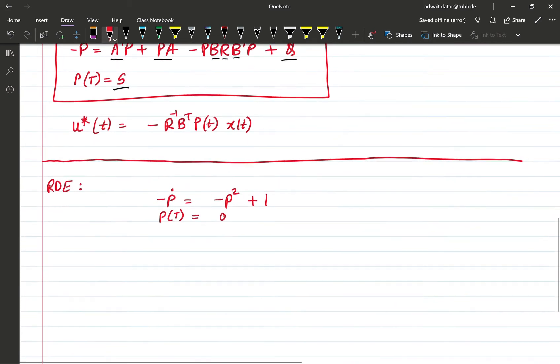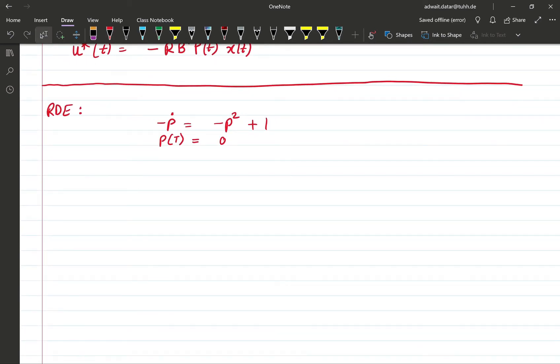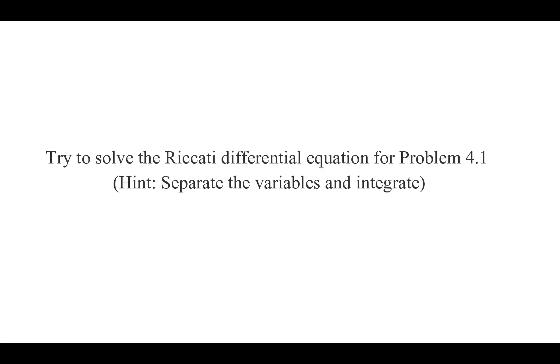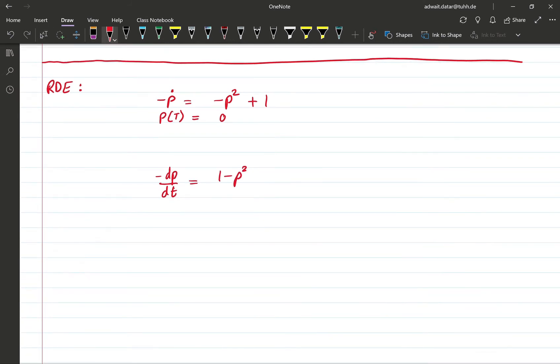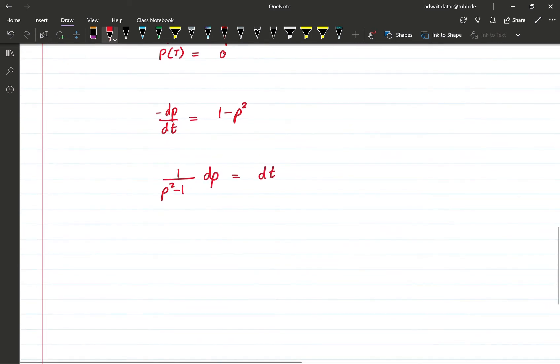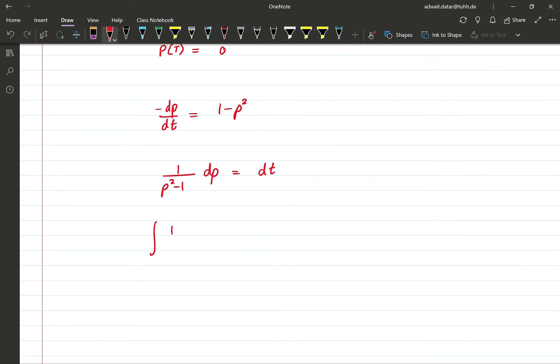So now we have here a differential equation that we can solve. Let's try to solve this equation now. We have -dP/dt equal to 1 - P². We can separate the variables to write 1/(P² - 1) dP equal to dt. Now integrating both sides we obtain this.